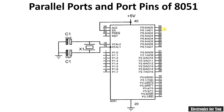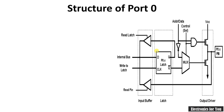Here are the port structures for the 8051: port 0, port 2, port 3, and port 1 respectively. The respective function is also written for each. Note that port 0 works as address lines and data lines, whereas port 2 only works as address lines.